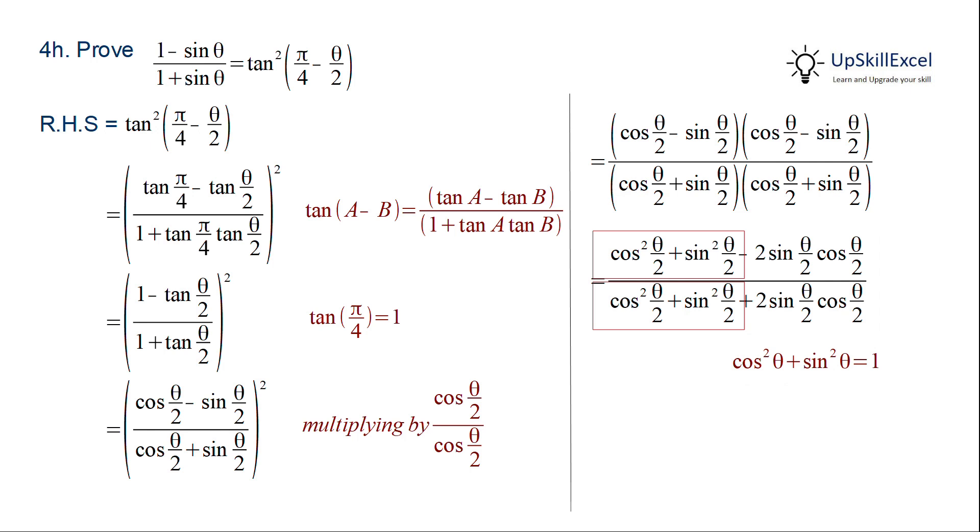We can replace this by 1 using cos square theta plus sin square theta, and we also have 2 sin theta by 2 cos theta by 2 which will become sin theta. So we get 1 minus sin theta by 1 plus sin theta which is equal to our RHS.